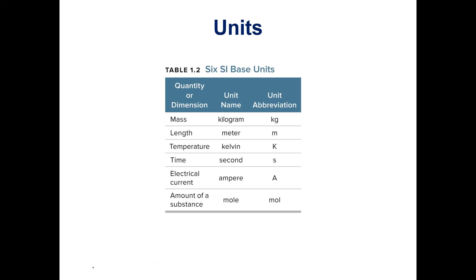Let's talk about units. There are base units that we use for various quantities or dimensions. For mass, you might think the base unit is grams, but actually we use kilograms because grams are pretty small — a gram is about the weight of a paper clip. For length it's the meter, and for temperature it's Kelvin, not Celsius, so we'll talk about how to do those conversions a little bit later.